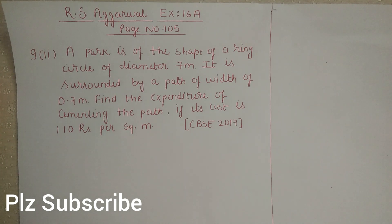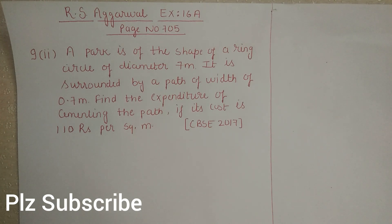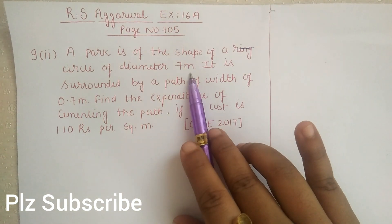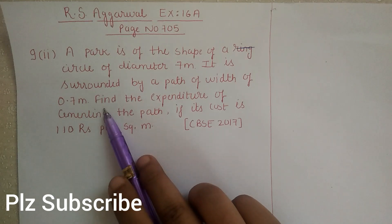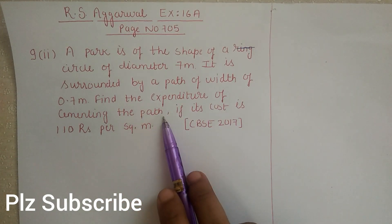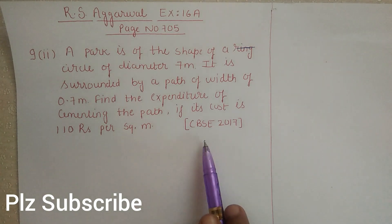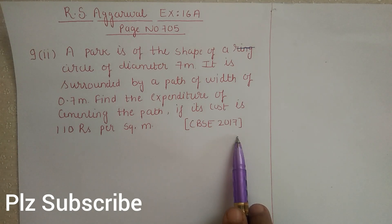Hello everyone, this is Neha from Maths Classes. In this video we will solve Exercise 16A from R.S. Aggarwal book. You can find these questions on page number 705. I am solving only those questions which have been asked in previous CBSE board exams. Question number 9: A park is in the shape of a circle of diameter 7 meters. It is surrounded by a path of width 0.7 meters. Find the expenditure of cementing the path if its cost is 110 rupees per square meter. This question came in CBSE 2017.